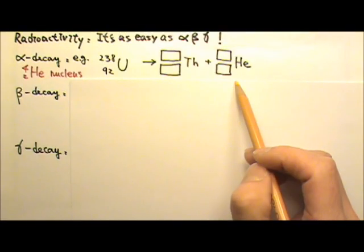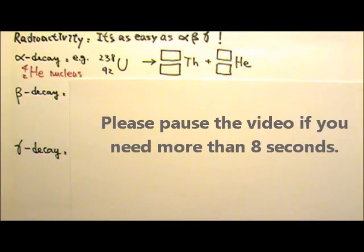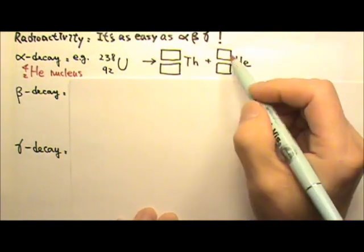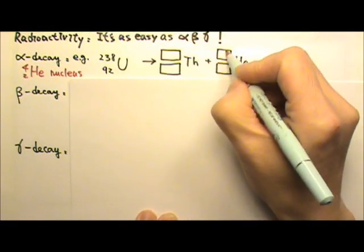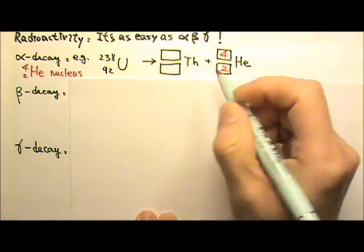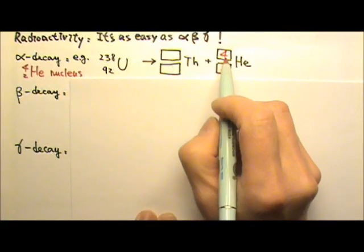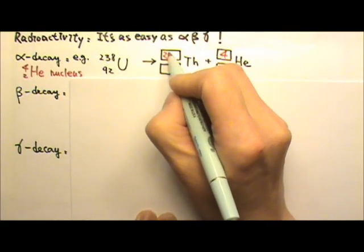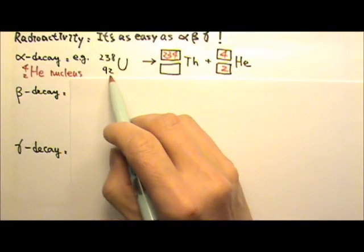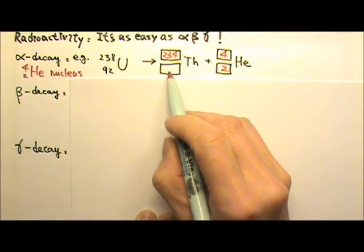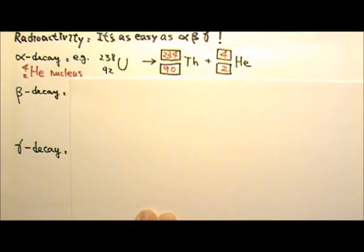Now see if you can balance this equation. For the alpha particle helium, we put 4-2 right here. And since this is 238, that should equal to this number plus 4, so this must be 234. And this is 92, and it should equal to this number plus 2, so this must be 90.